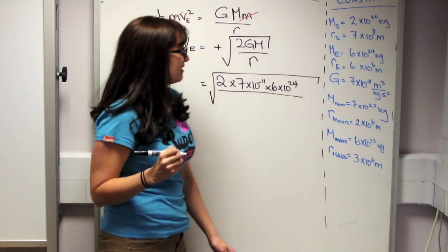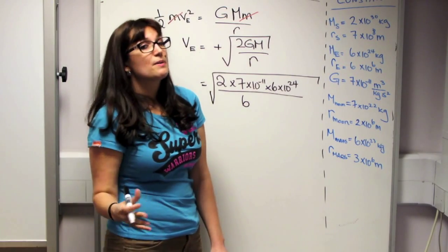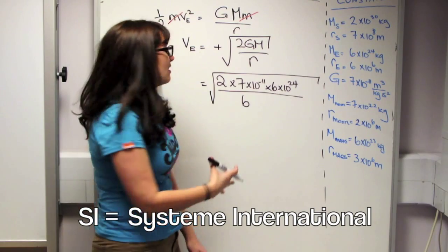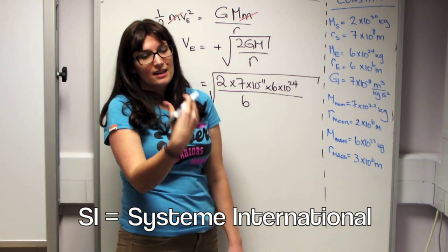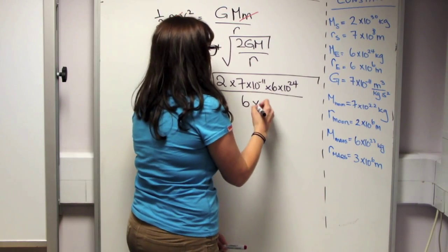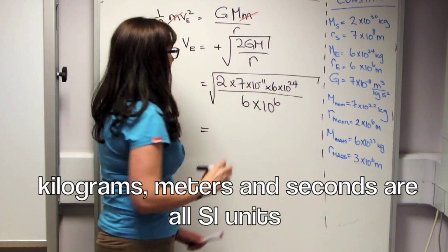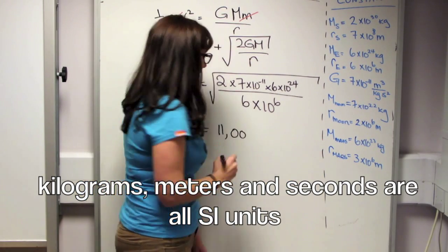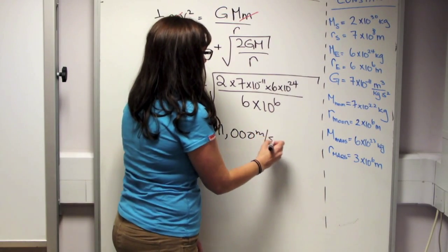And we divide this by the radius of the Earth, which is about 6000 kilometers. But because we're using meters, and these are called SI units, we're going to write this in meters. So 6,000 kilometers is 6 million meters. So that's 6 times 10 to the 6th meters. And once we crunch all these numbers, we find that indeed the escape velocity of the Earth is about 11,000 meters per second.